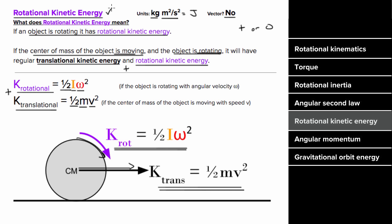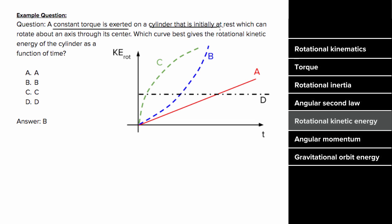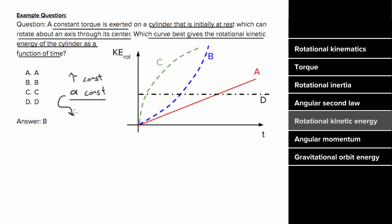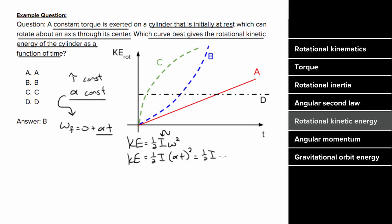What does an example problem involving rotational kinetic energy look like? A constant torque is exerted on a cylinder initially at rest rotating about an axis through its center. Which curve best gives the rotational kinetic energy as a function of time? A constant torque causes constant angular acceleration. Starting from rest, the final angular velocity is ω = αt. So rotational KE = (1/2)Iω² = (1/2)I(αt)², which is proportional to t squared. Therefore the kinetic energy as a function of time is a parabola, so the correct answer is curve B.